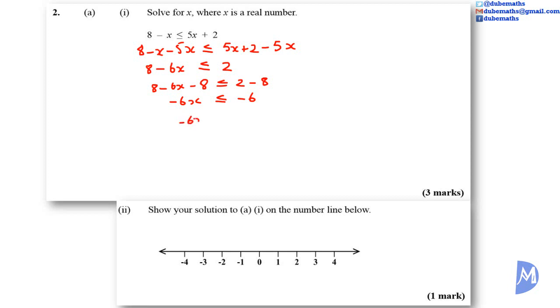So negative 6X divided by negative 1 is greater than or equal to negative 6 divided by negative 1. A negative divided by a negative is a positive. So positive 6X is greater than or equal to 6. We divide by 6 to get X is greater than or equal to 1. Part 2. Show your solutions above on the number line below. X is greater than or equal to 1.